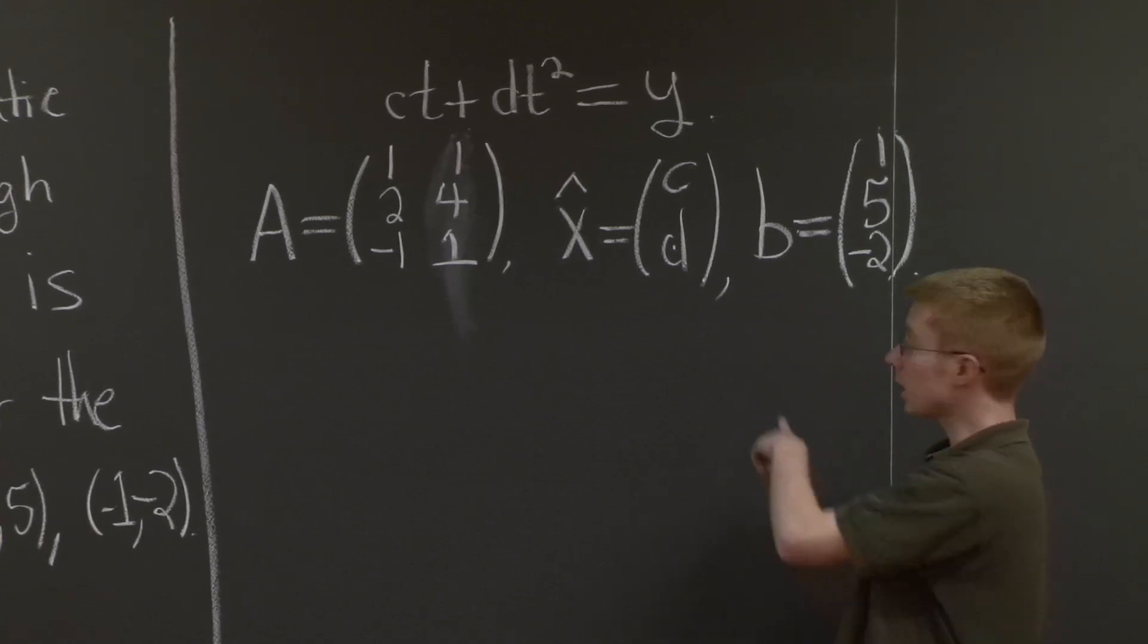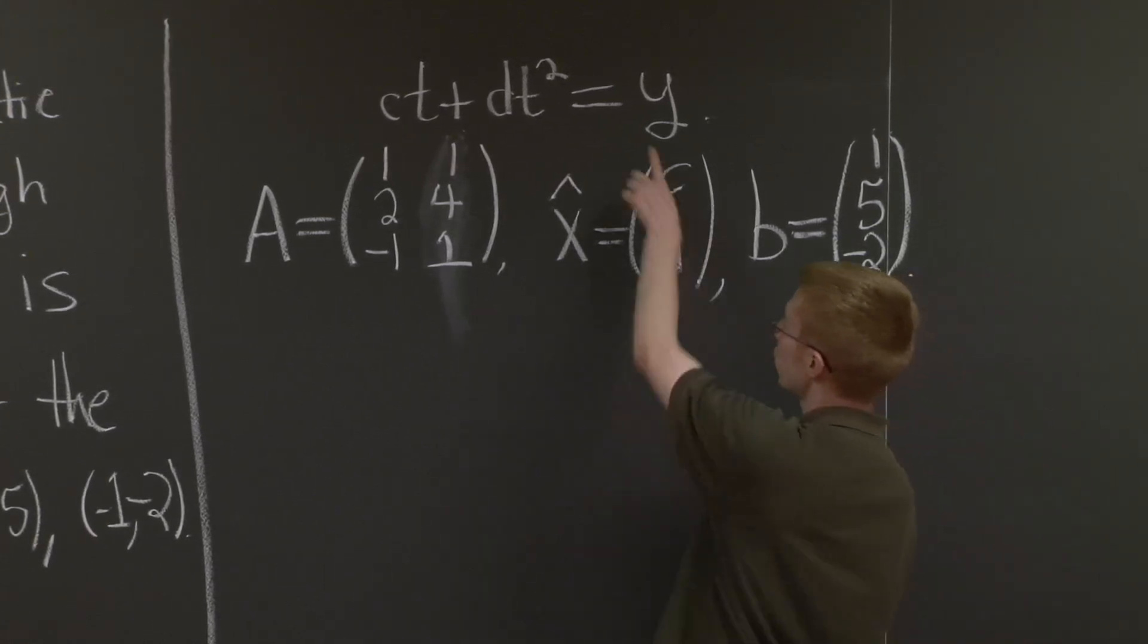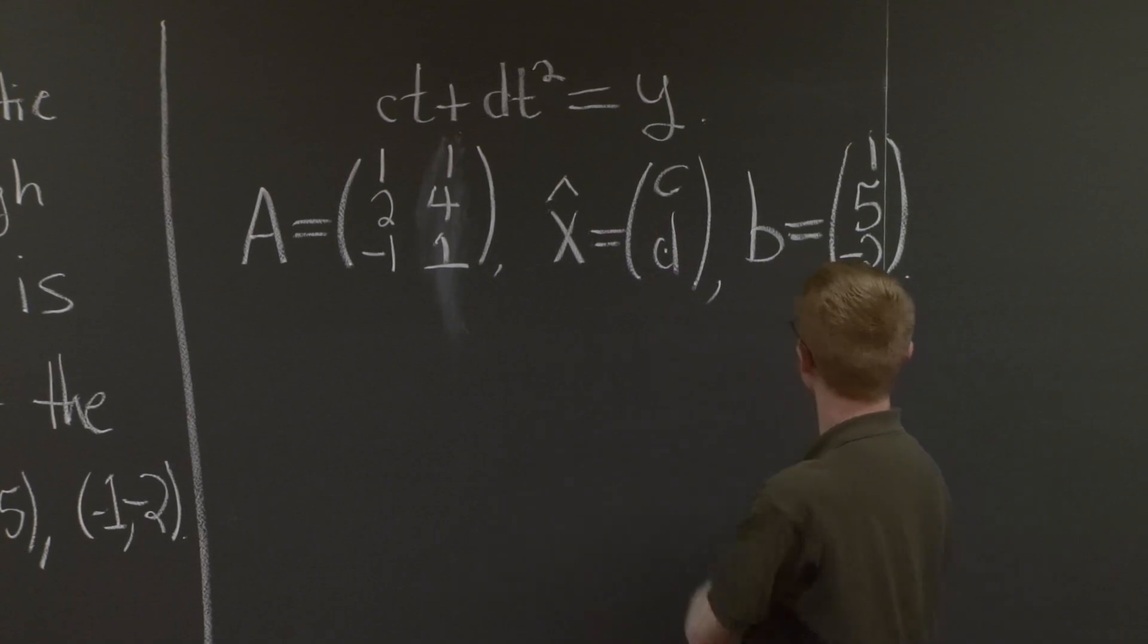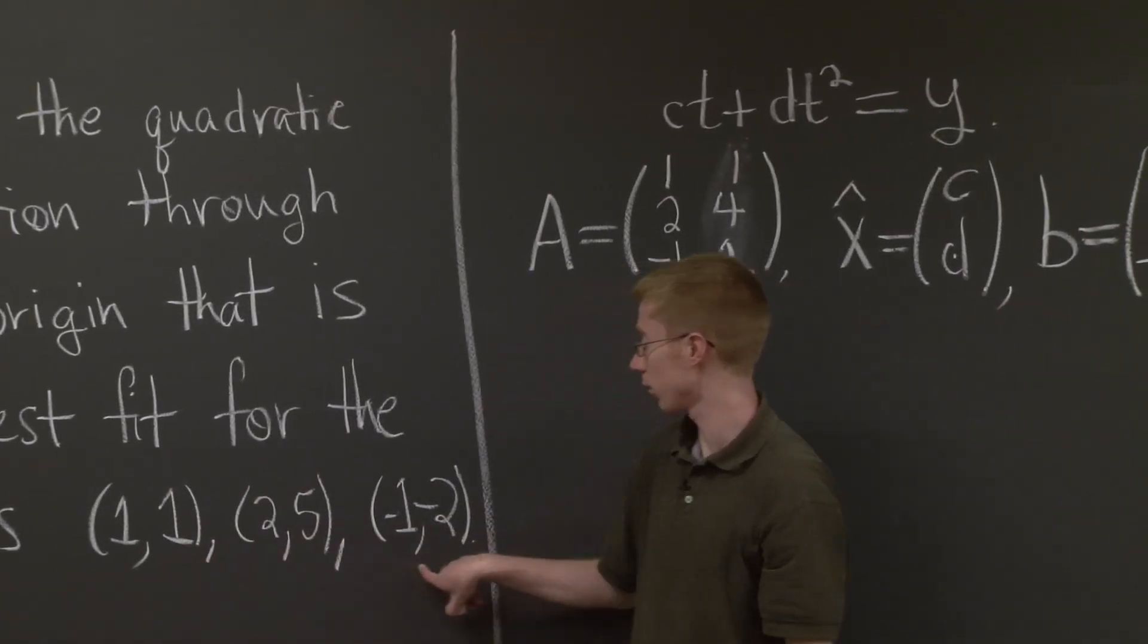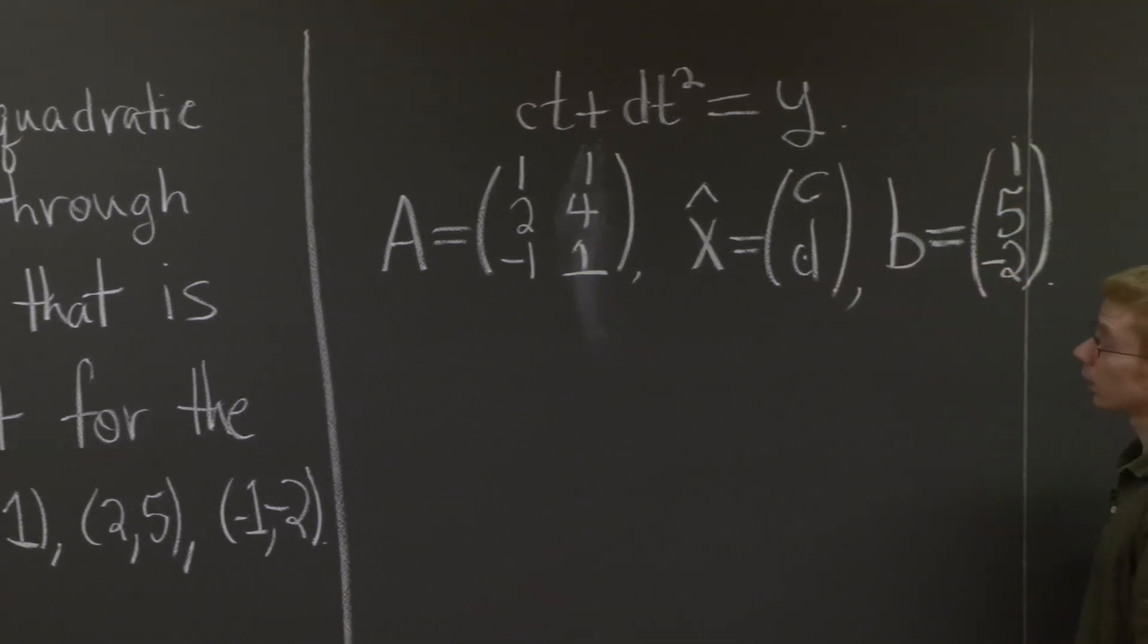And where did the b come from? Well, the b came from plugging in these points to the right-hand side. So 1, 5, and -2 are just the y-coordinates of these three points. Good.